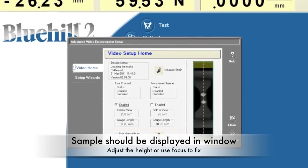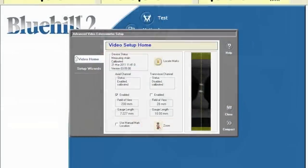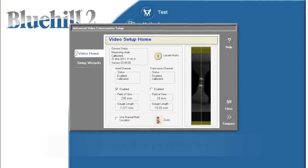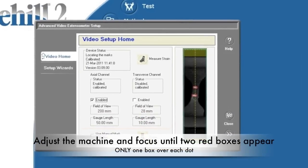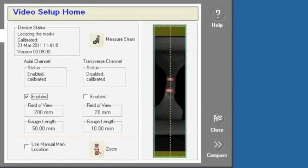Make sure the sample is displayed in the black window. Move the video extensometer and use the focus inside the box to adjust and focus the sample view. Line up the white dots on the middle dotted line. Two red boxes should appear, one over each of the dots. If multiple red boxes appear, try to refocus the video or redo the dots.